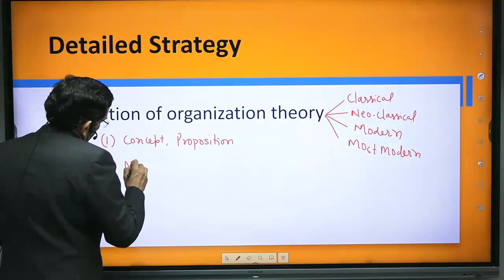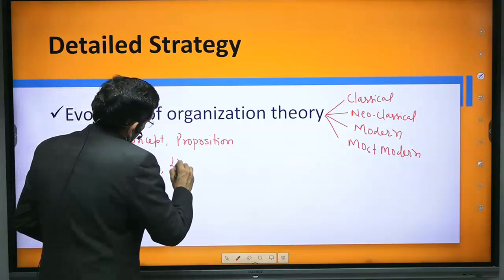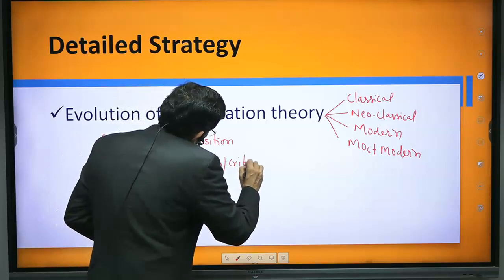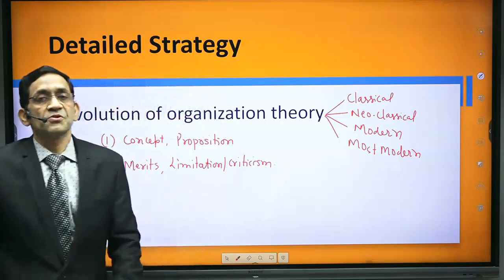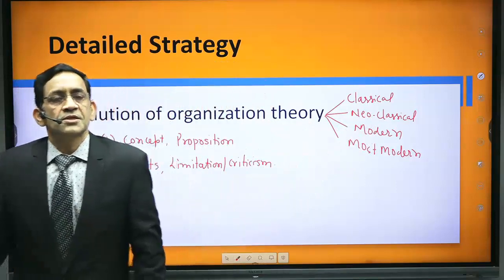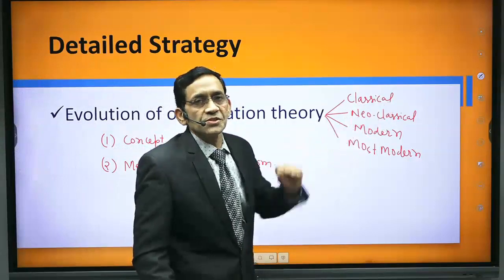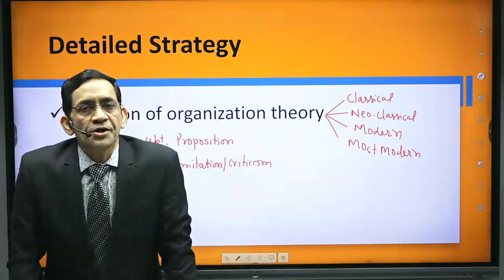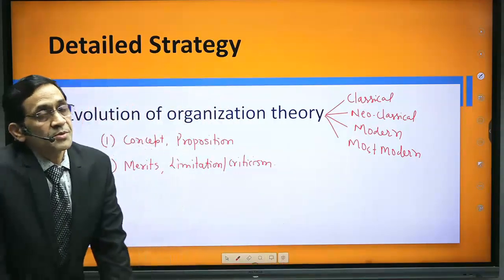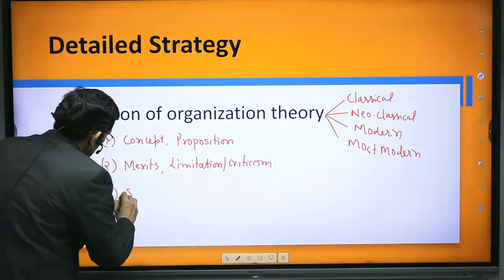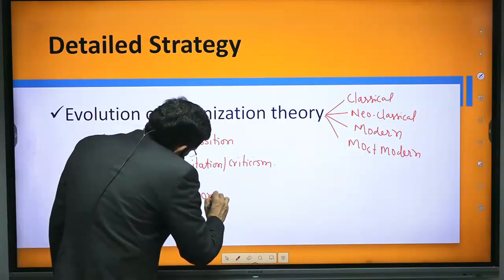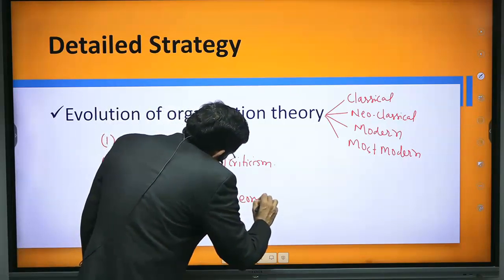Second, prepare the merits of each thinker, and third — very importantly — the limitations or criticisms. Questions have been asked on criticisms; for example, cynical perpetrating is a criticism of neoclassical theory, red tapism is a criticism of classical bureaucracy theory, and hoarding of authority is a criticism of Weberian bureaucracy. Another important area is superiority of one theory over another.